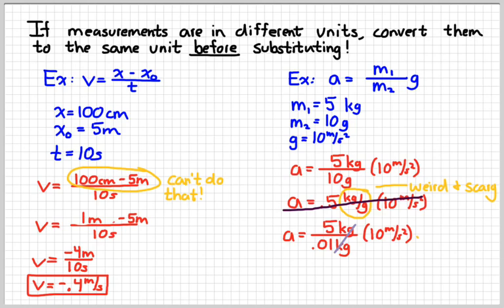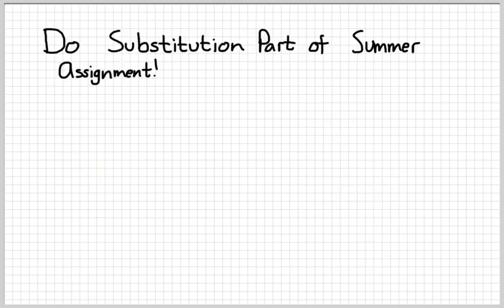So, now the kilograms cancel out, which gives me the correct unit. So, you can see there's a big difference in the numerical value that we get when we do the units correctly versus when we do them incorrectly. And so, there's not a whole lot that we need to know about units of measurement, and we'll obviously learn things as we go throughout the year. But, for right now, I want you to remember those basic unit conversions you learned in chemistry, centi and kilo being the two most important, and that if you have different units, make them the same units before you actually substitute them into your equation.